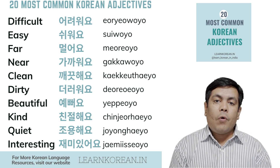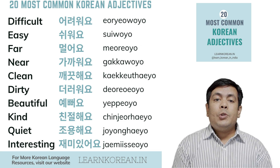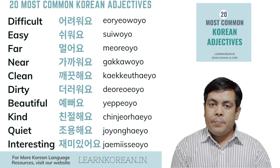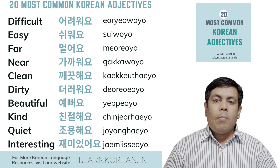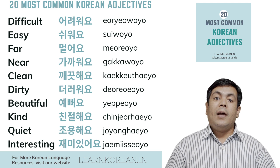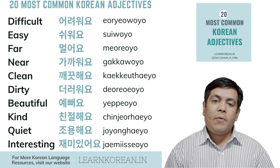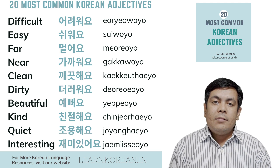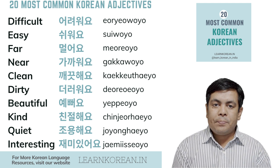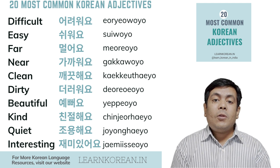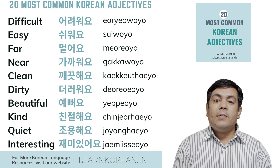Number eleven is 'to be difficult'. Then 'to be easy' — to be easy would be... Then we have 'to be clean'. To be clean would be... And then 'to be dirty'. Then we have 'to be beautiful'. To be beautiful would be...